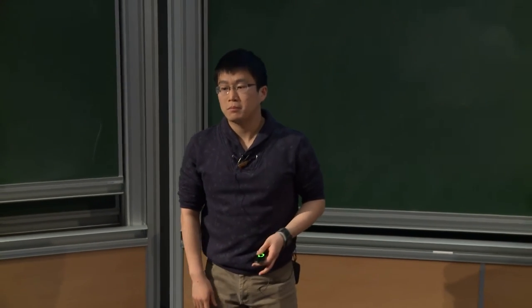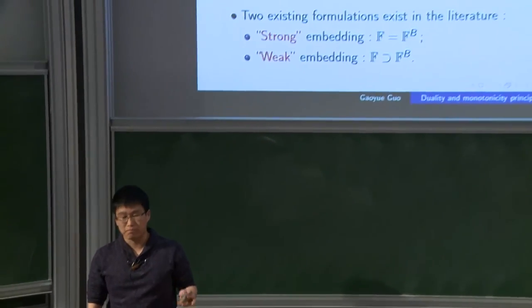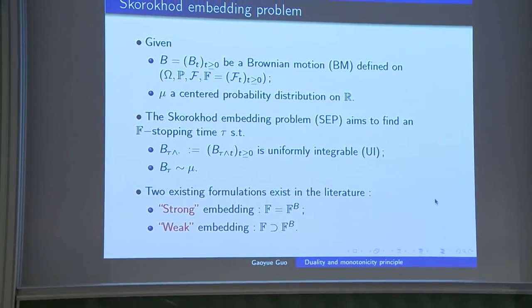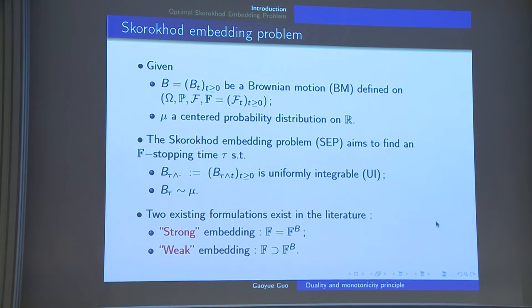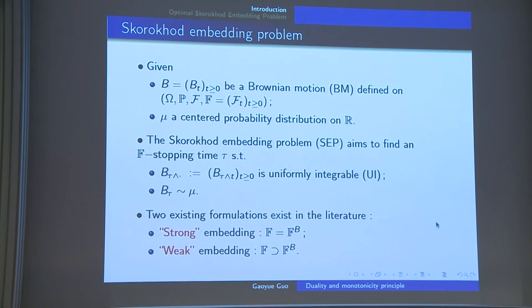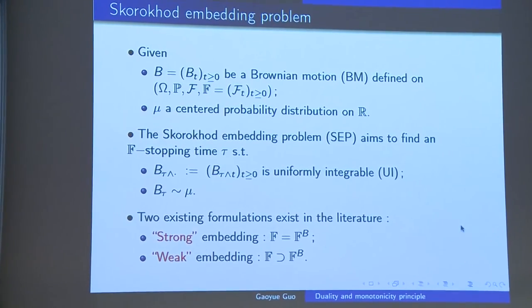The Skorokhod embedding problem aims to present some probability distribution on a real line as a law of a Brownian motion stopped at some stopping time. That is to say, given some Brownian motion defined on some probability space and a centered probability measure mu, the problem consists in finding a stopping time tau such that the stopped process b_tau is uniformly integrable and the random variable b_tau has a given law mu.